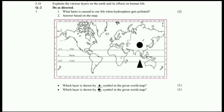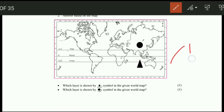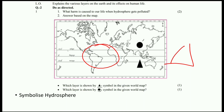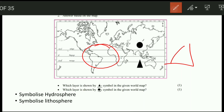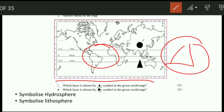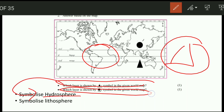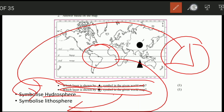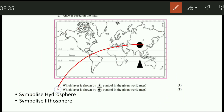The next part asks: which layer is shown by this symbol in the given world map? The symbol represents the lithosphere. So to clarify — one symbol represents hydrosphere and the other represents lithosphere.